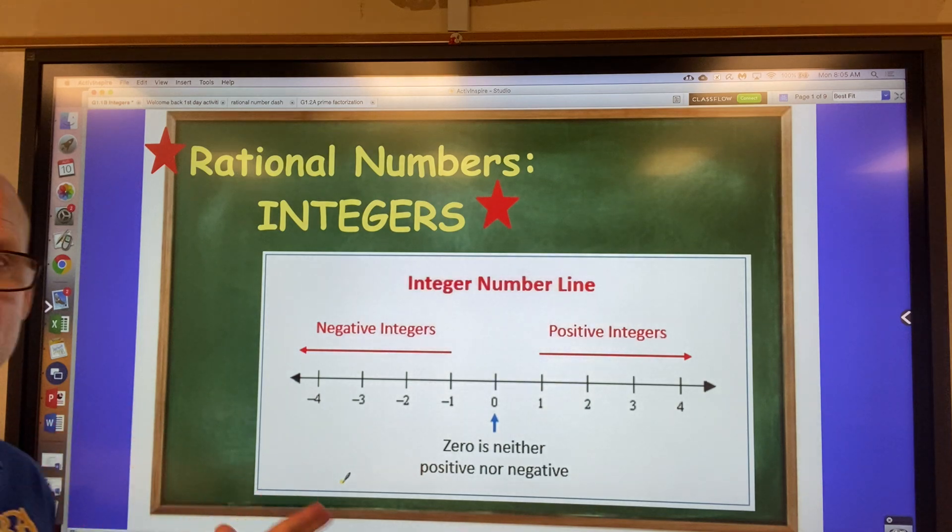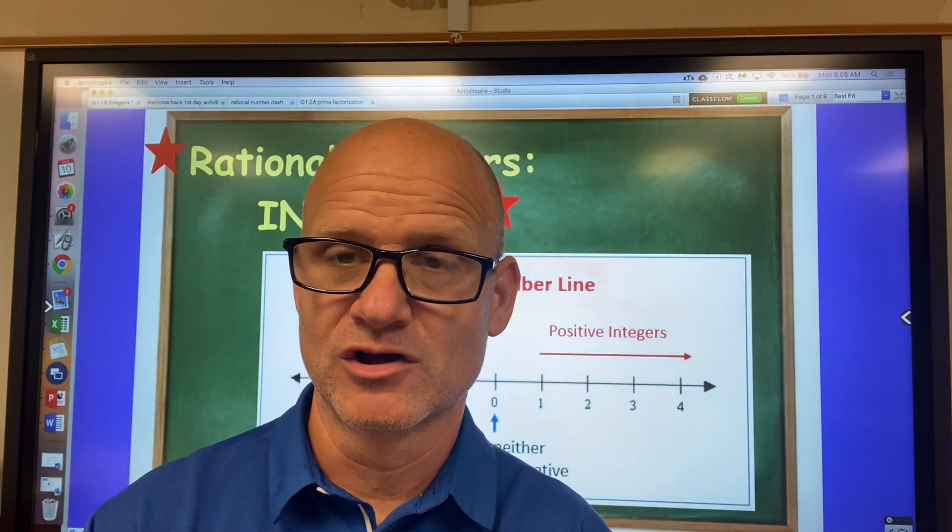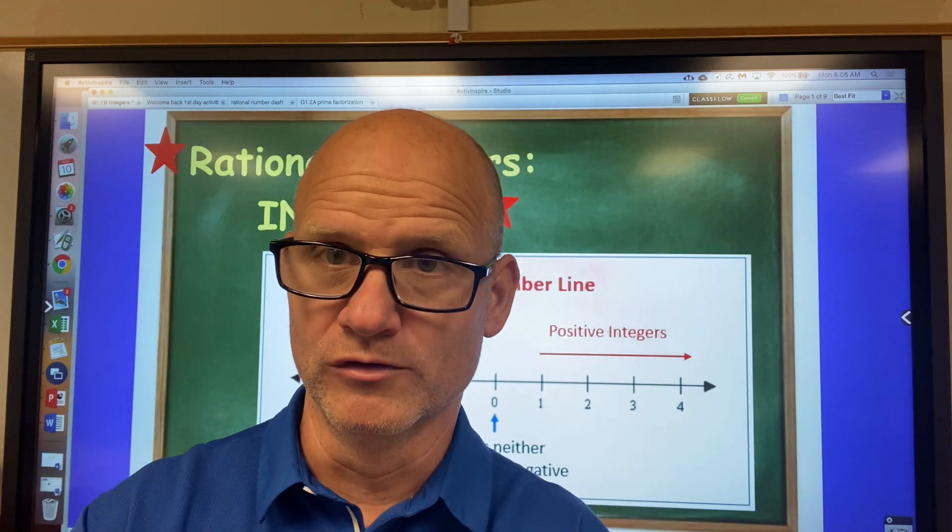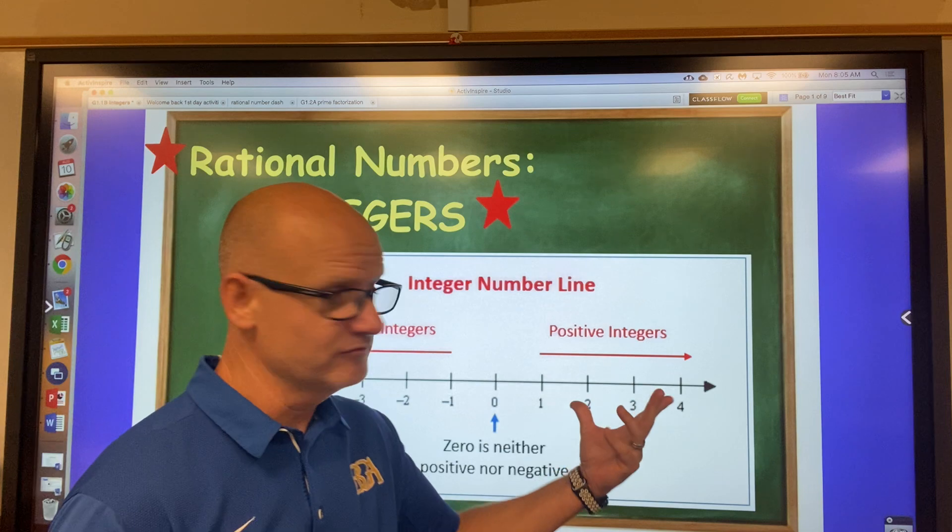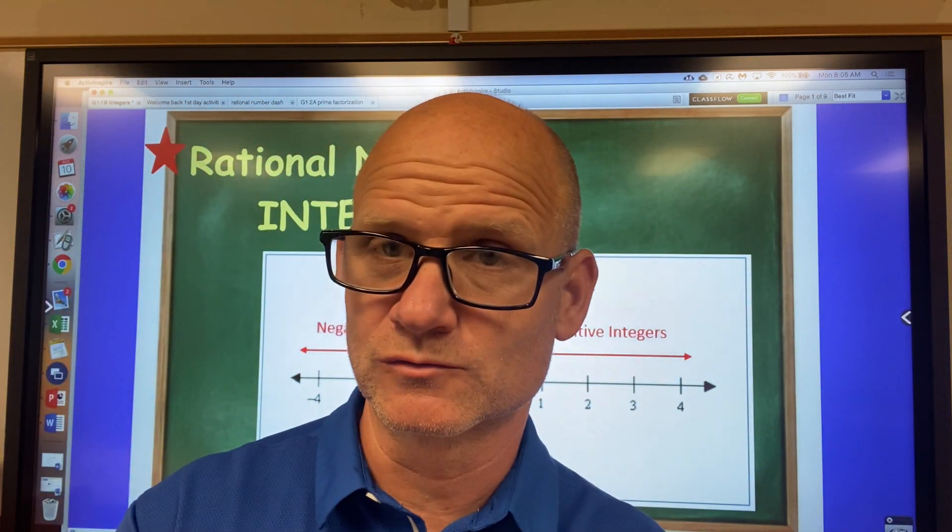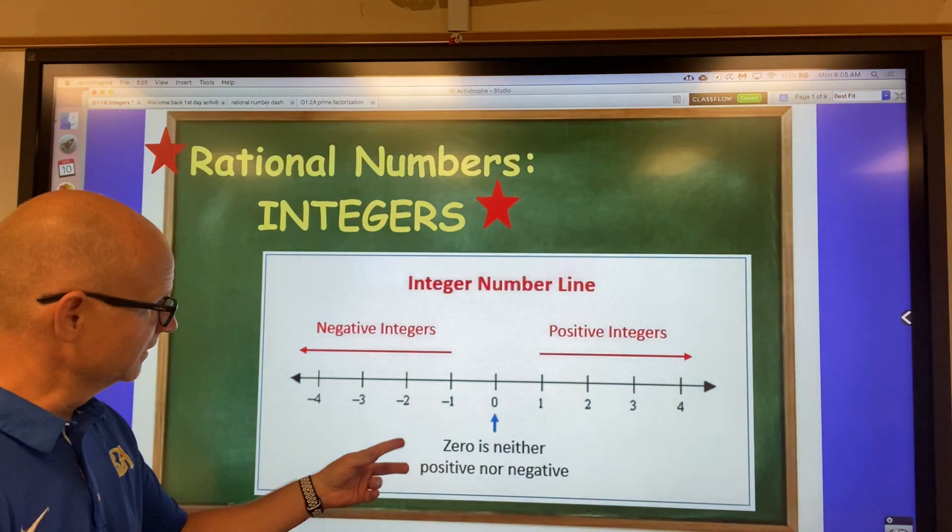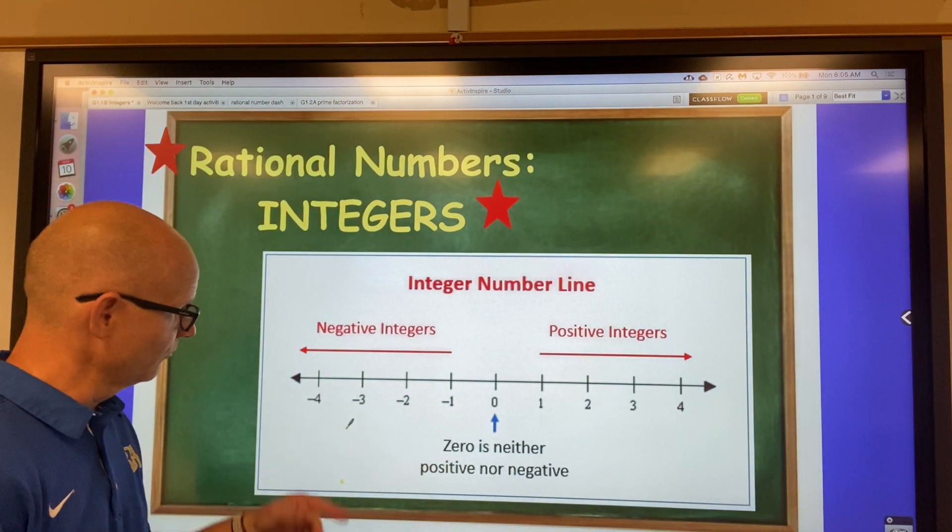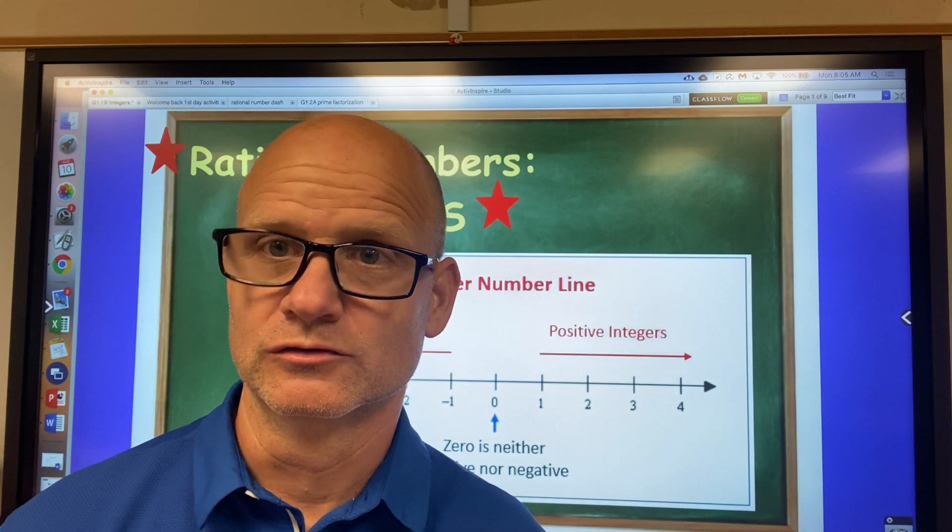So integers, remember what integers are, a little refresher. Integers are positive and negative whole numbers, okay? So an example of an integer would be one, two, three, four, right? But those are counting numbers as well. But another example would be negative one, negative two, negative three, negative four. Those are integers.